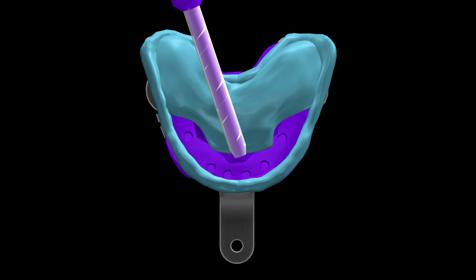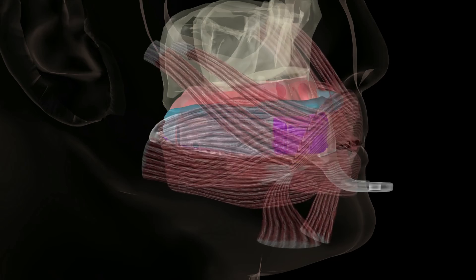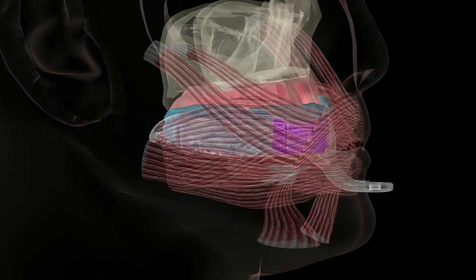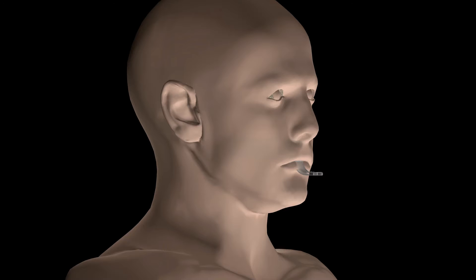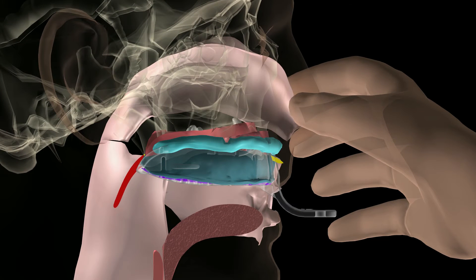Now, apply the rigid PVS into the tray over the implant coping locations. Then, place back into the mouth and have the patient repeat functional border molding, including the post-palatal area with the patient coughing while occluding their nostrils.